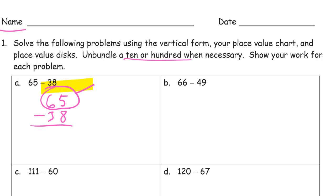It doesn't work. When you don't have enough ones — keep in mind the subtraction symbol is down here for a reason. You're subtracting 3 tens and 8 ones. You can't subtract 5 ones because you're subtracting 8. So you've got to unbundle a 10. That gives you 10 more ones; add it to the 5 you already have, and that's 15 ones. When you unbundle that 10, you only have 5 tens left. So now: 15 ones minus 8 ones is 7 ones, and 5 tens minus 3 tens is 2 tens — 27.